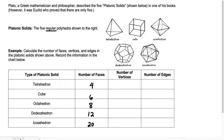Now we want to know the number of vertices for each. On the tetrahedron: one at the top, three more along the bottom — four total. For a cube: four along the top, four along the bottom — eight total. For the octahedron: one on top, four along the middle, one on the bottom — six total.